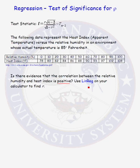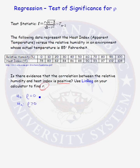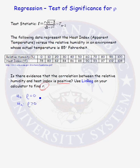We are going to use LinReg (linear regression) on our calculator only to help us find the sample correlation coefficient r. The first thing in any test of significance is to state the null and alternative hypotheses. Our null hypothesis is that rho equals zero; the alternative is that rho is greater than zero. We believe there should be a positive association between those two variables, hence the one-sided alternative. In English: the null is that the correlation between relative humidity and heat index is zero; the alternative is that it is positive.